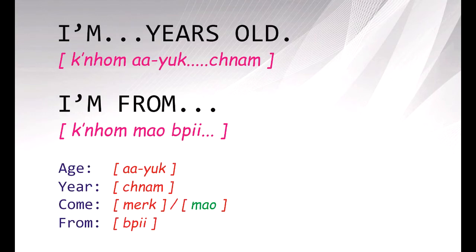'I'm [age] years old.' In this space, you put a number for your age. In Khmer, just say 'nhóm' — that's 'I' — and then the number, followed by 'chnam'. Nhóm... chnam.